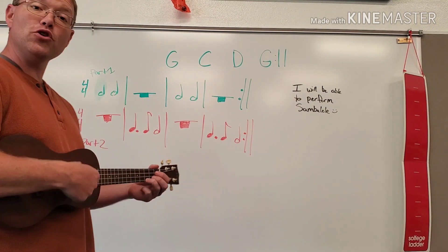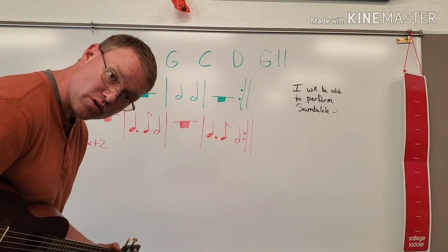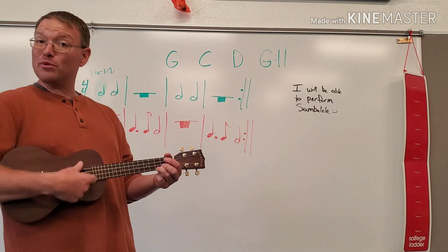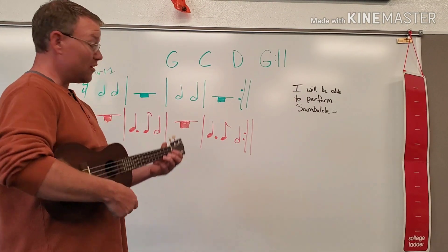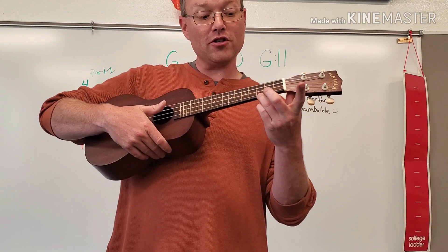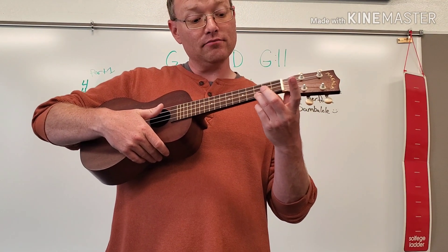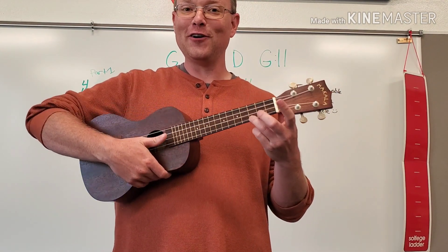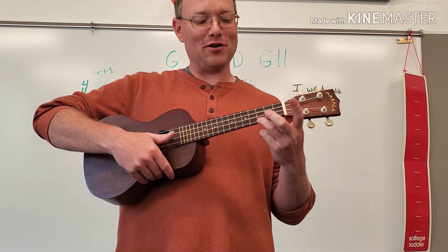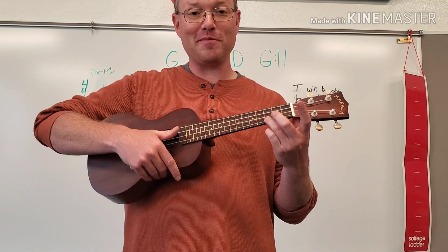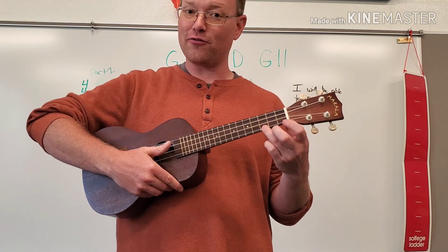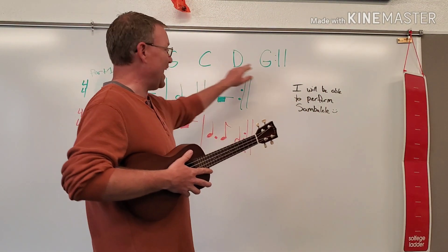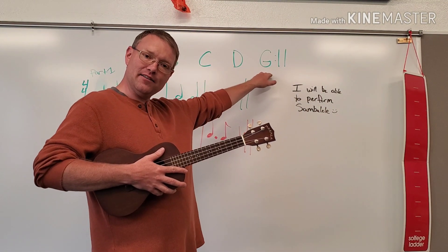Now if you do happen to have a ukulele, there are going to be three chords. The first one is G — third finger, bottom string in the third fret. That's G. G happens at the beginning and at the end.